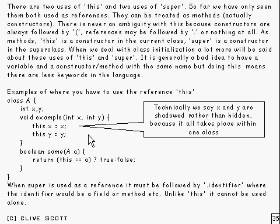Technically, of course, we say that x and y here are shadowed rather than hidden. And we do that because it all takes place within one class here. And this sometimes happens with local variables and arguments. They often shadow fields outside.